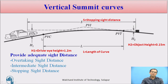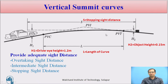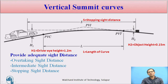Overtaking sight distance means a very flat curve. Even on a steep gradient, the length of the curve is larger in that section, giving the driver enough distance to take proper action on the summit curves.